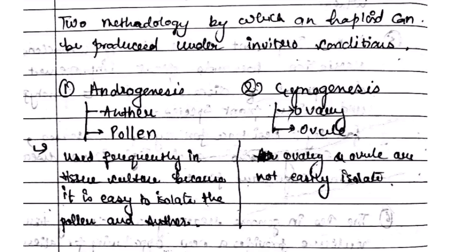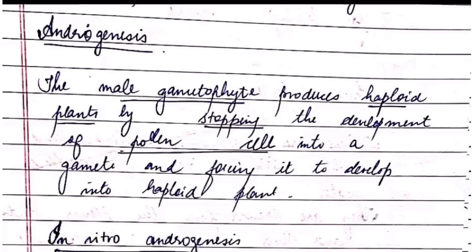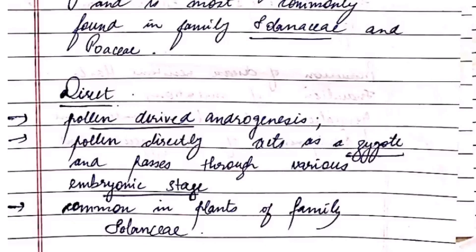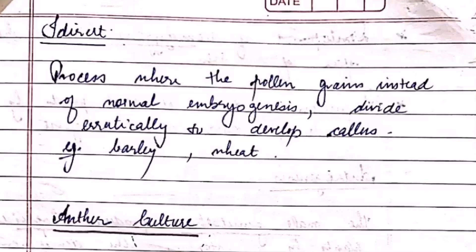There are two methods by which a haploid can be produced under in vitro conditions: androgenesis and gynogenesis. Androgenesis means haploid production occurs through anther and pollen, and gynogenesis means production occurs through ovary and ovule. In androgenesis, the male gametophyte produces haploid plants by stopping the development of pollen cells and forcing it to develop into a haploid plant. This is of two types: direct and indirect. Direct is derived from pollen, where the pollen acts as the zygote, common in the family Solanaceae. In the indirect type, pollen grains divide to form callus — an example is wheat.